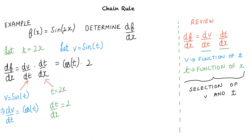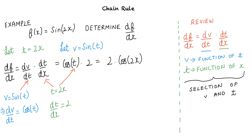So df/dx equals 2 cos(t), right? That is true to some extent, but the problem is not done. We have been asked to evaluate the derivative with respect to x, but 2 cos(t) has a t term in it. Hence, we substitute the value of t, which is 2x, back into our solution to obtain the final answer. Thus, the derivative of sin(2x) with respect to x is 2 cos(2x).